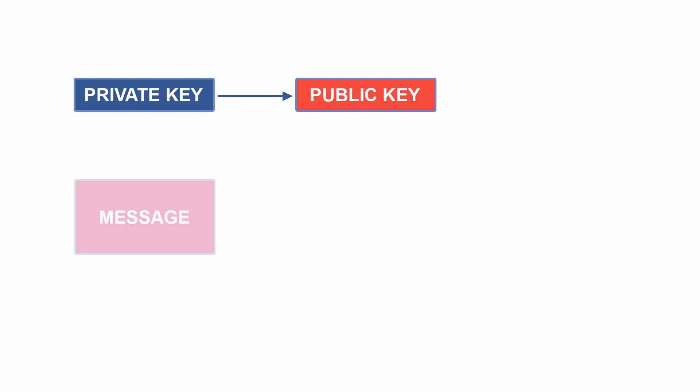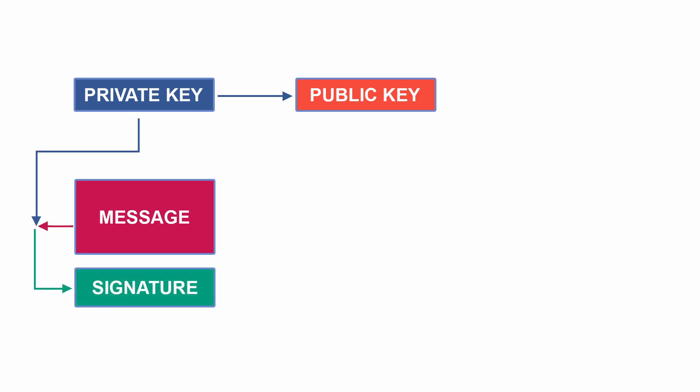Now let's say you want to send some message — by message we mean anything, just text or in the case of cryptocurrency, transactions. So you come up with a transaction, let's say 'Don sends Nick two bitcoin.' You have a private key. Instead of putting the transaction directly into the blockchain, the private key is combined with the message and together they generate a signature. Only you know the private key, and therefore the signature will be unique to you. This message will always go with the signature.